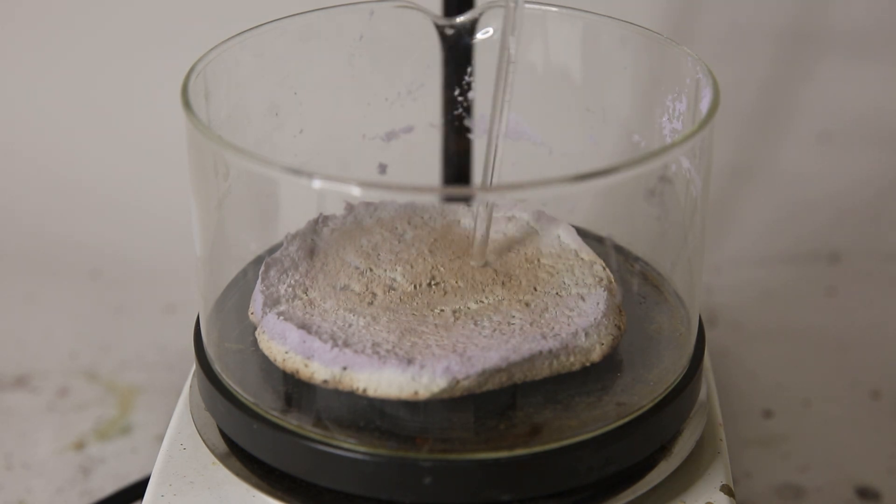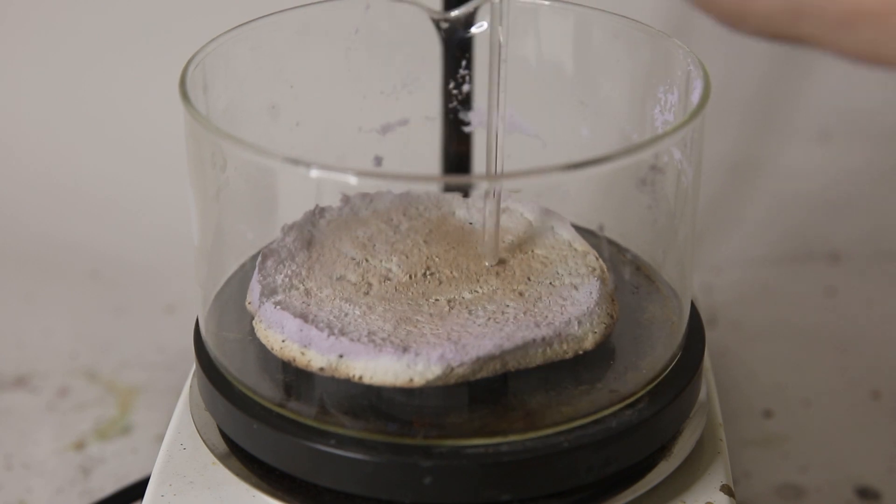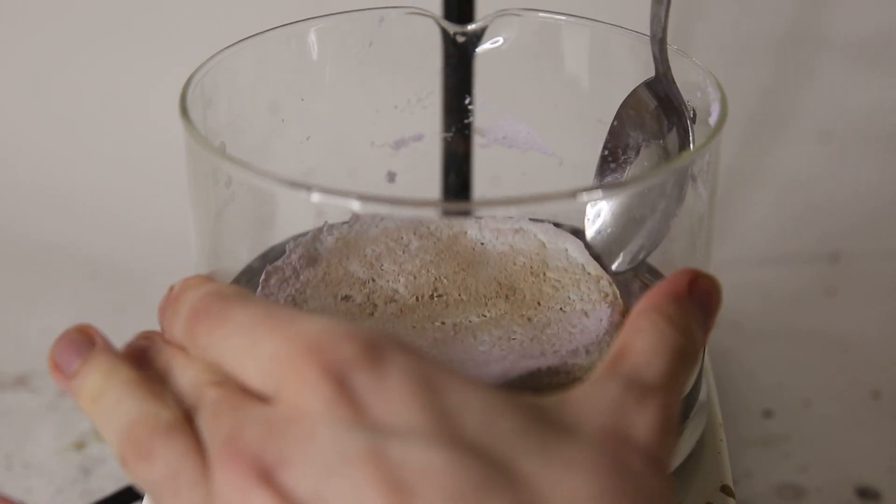It is also discolored, because silver chloride degrades under the influence of light to silver and chlorine gas. The discoloration is therefore not a problem, and it will actually help us later.